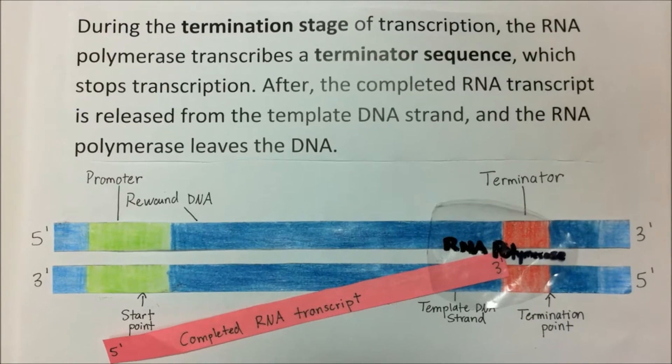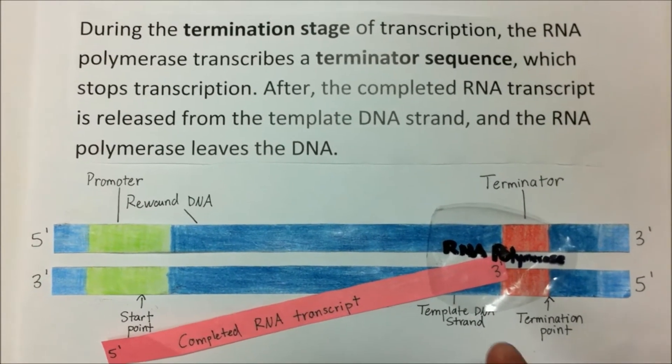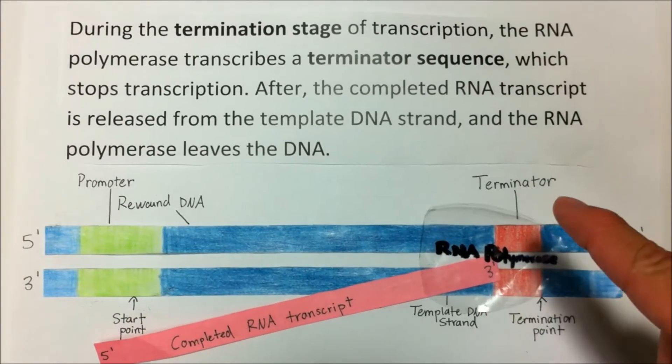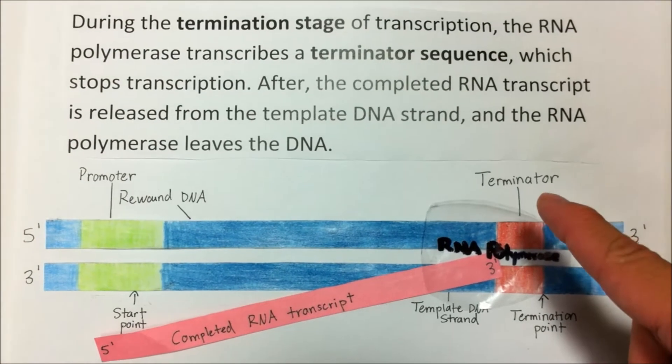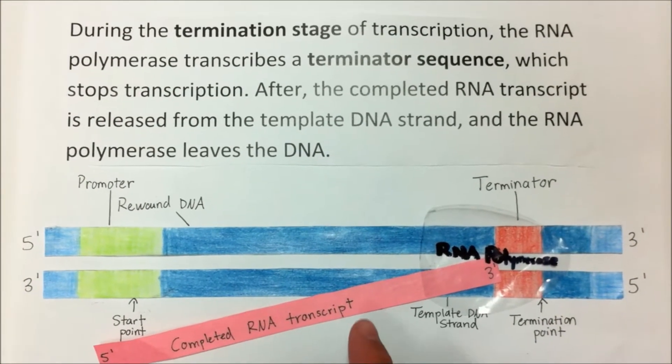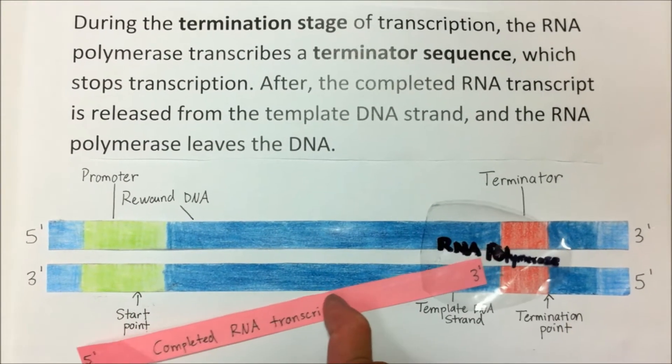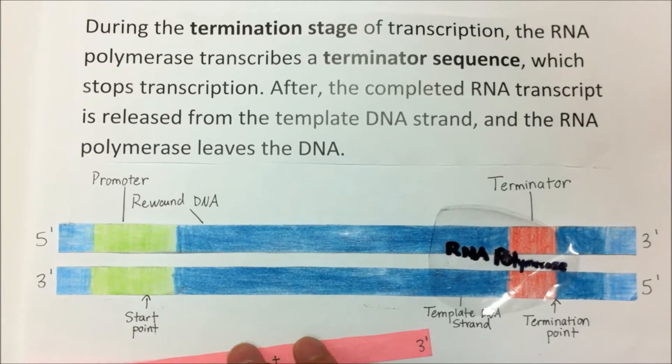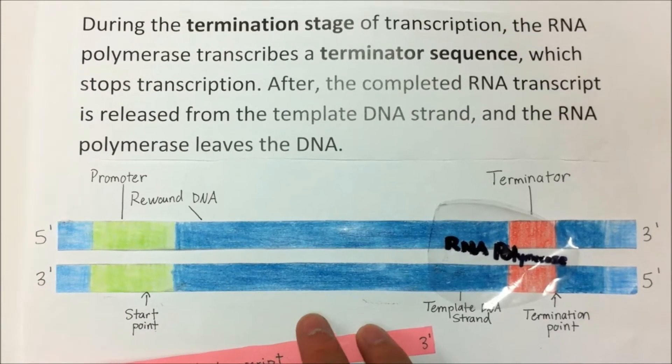During the termination stage of transcription, the RNA polymerase transcribes the terminator sequence, which stops transcription. After, the completed RNA transcript is released from the template DNA strand, and the RNA polymerase leaves the DNA.